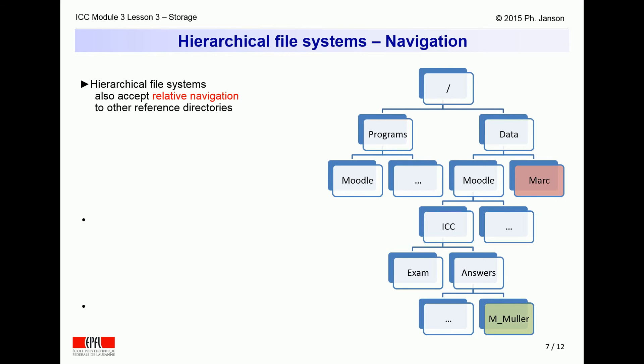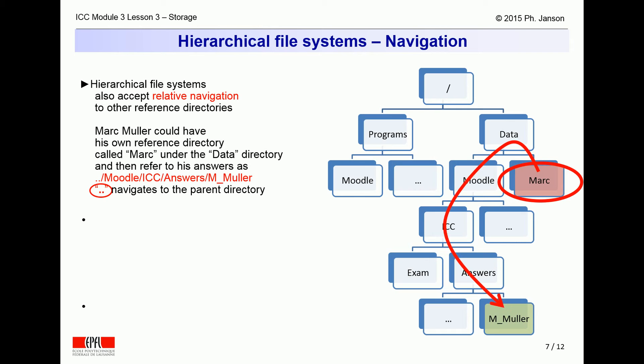Beyond unambiguous universal tree names and possibly ambiguous local names relative to a reference directory, hierarchical file systems also often accept other forms of relative file names. For instance, Mark could have a personal home reference directory under the data directory. He could then refer to his own answers relative to that directory as ../Moodle/ICC/Answers/M_Mueller, where the notation '..' indicates navigation up to the parent directory — the data directory in this case.